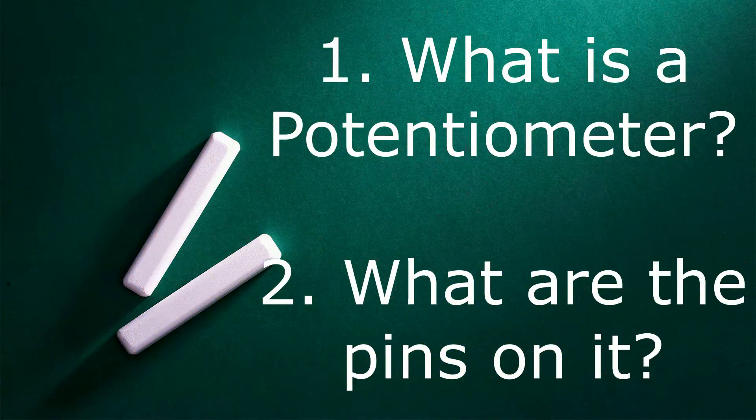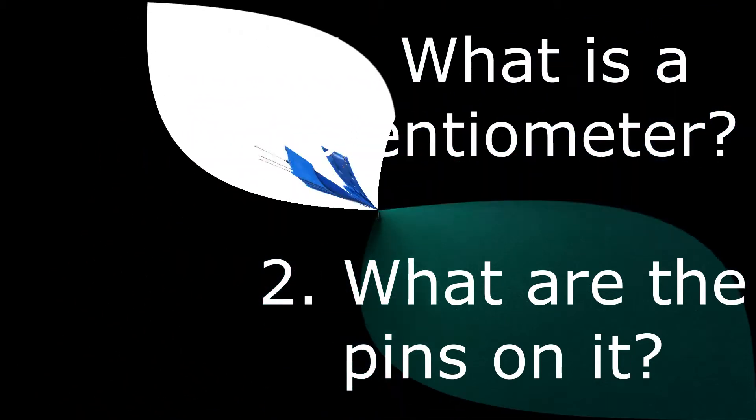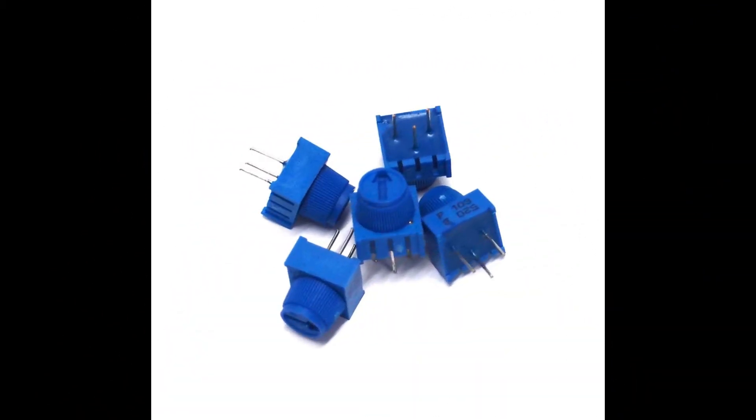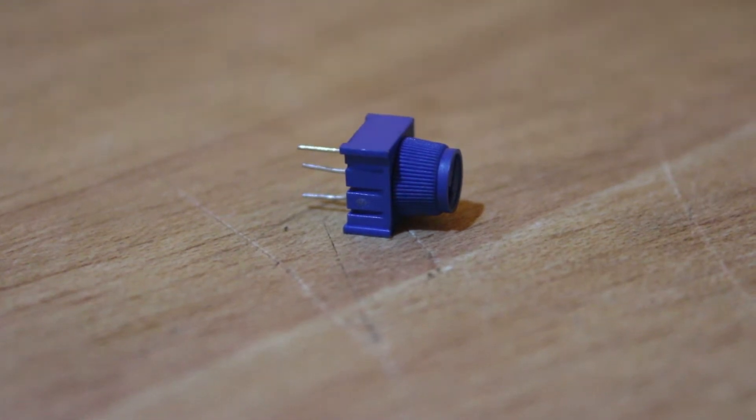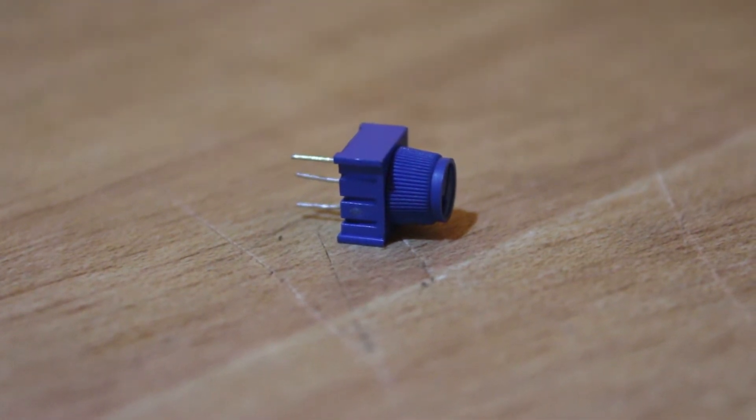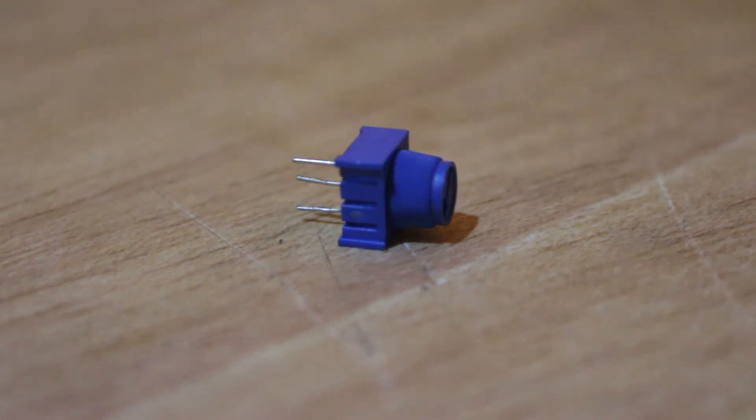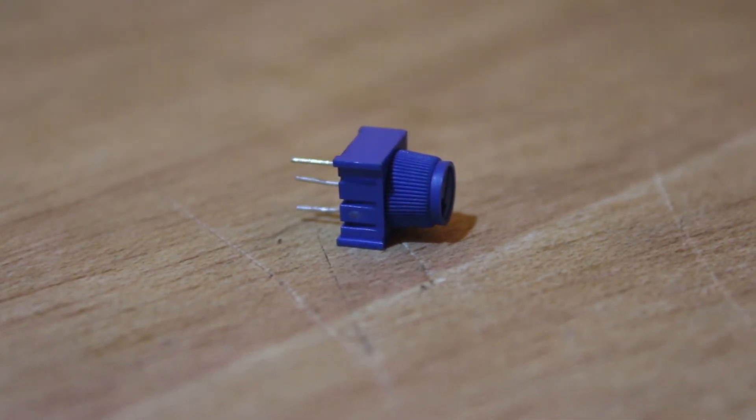Welcome back to the STEAM Brains channel. Today our lesson is on a potentiometer. Most of you at home are asking what a potentiometer is. A potentiometer is a component which is used to control the brightness of an LED bulb in an electronic circuit.